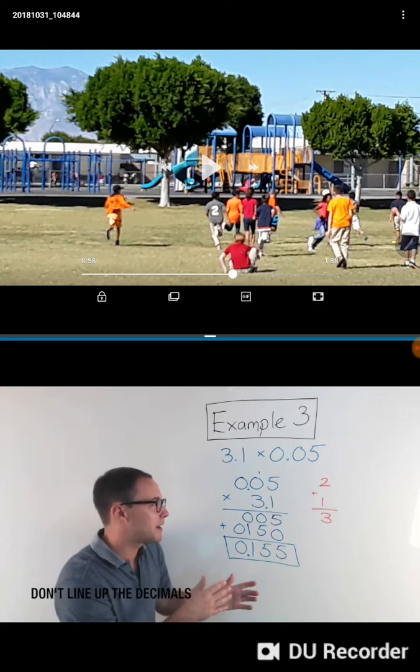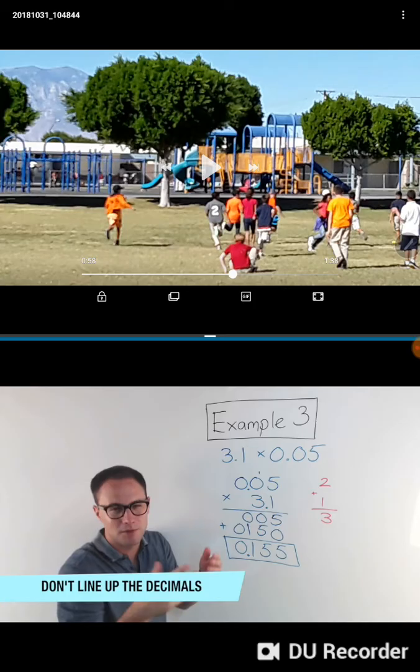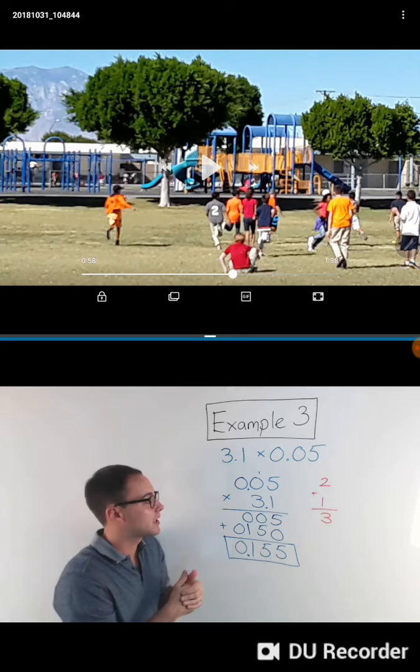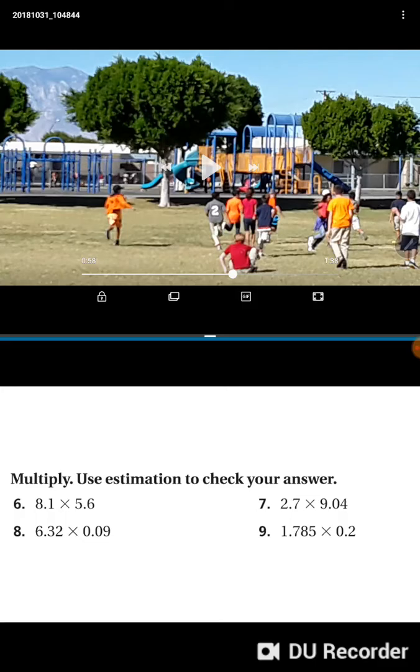Again, remember, when you're multiplying decimals, do not line them up. Sometimes they will line up just because they have the same decimal places, but they don't need to be. That's the main difference. Here's some more to try on your own.